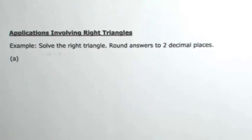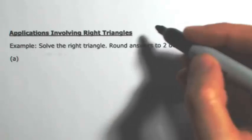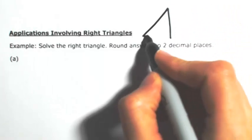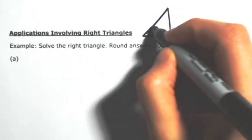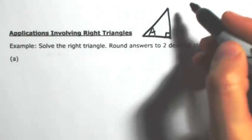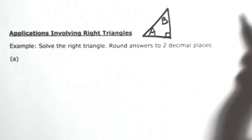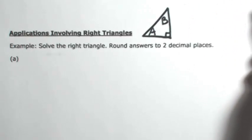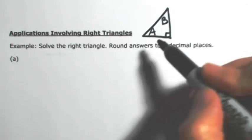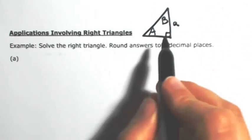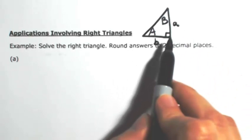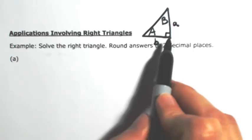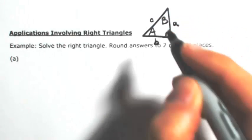Let's do some applications involving right triangles. I'm going to draw a right triangle so I can identify some general angles and sides. At the bottom left I'll call this angle A, using a capital letter. The other angle at the top will be angle B. The sides opposite will be lowercase letters — side opposite angle A is lowercase a, side opposite angle B is lowercase b. The 90-degree angle is angle C, so the side opposite that is lowercase c.